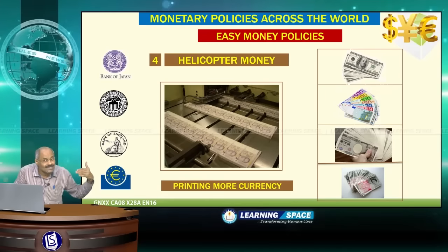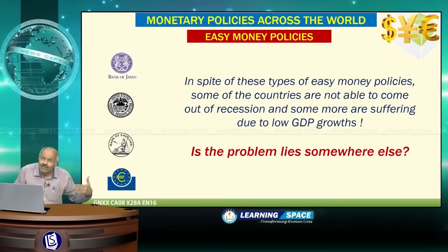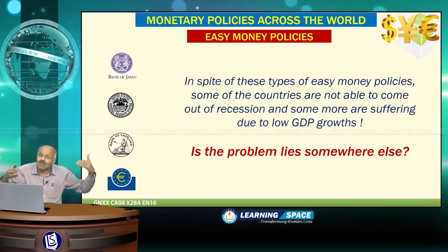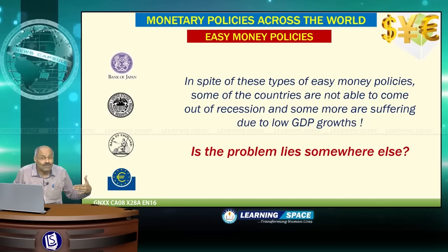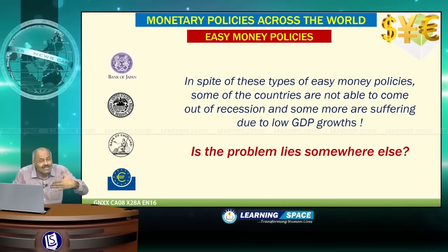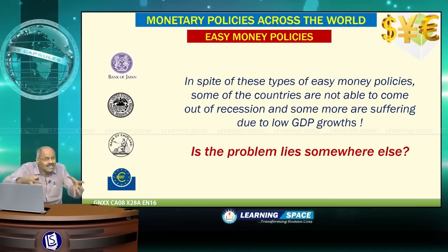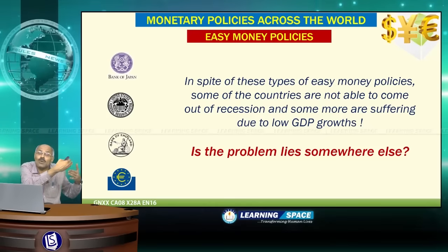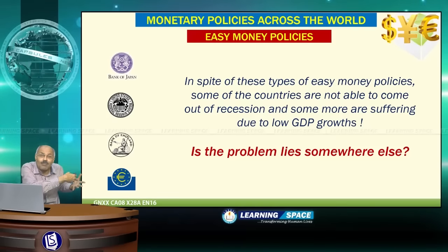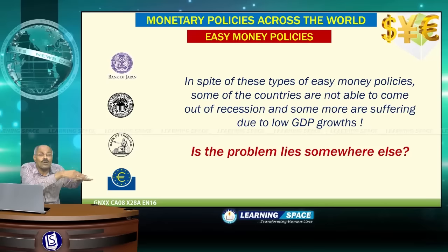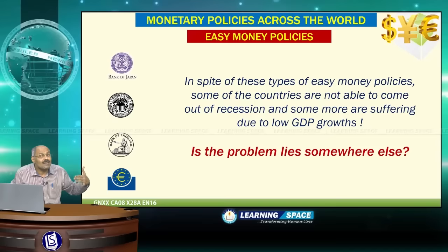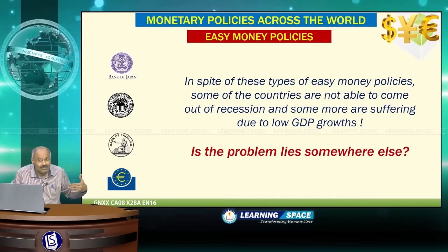Despite all these easy money policies, some countries have not been able to come out of recession and are still experiencing low growth rates. Furthermore, these policies of keeping interest rates abysmally low are creating problems in emerging economies. Lot of money flows into emerging economies due to easy money policies, resulting in asset bubbles, and when the money is suddenly withdrawn, it leads to crashing of stock markets in emerging economies. These are called spillover effects, as Raghuram Rajan has often commented upon.